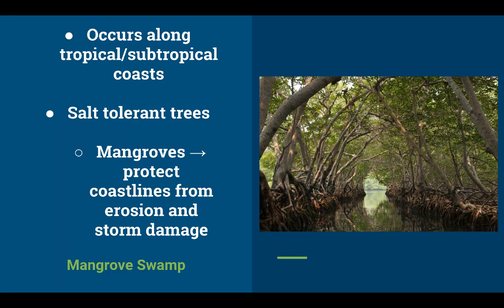Moving on to mangrove swamps — found along tropical and subtropical coasts, these feature salt-tolerant mangrove trees. Mangroves have adapted to extract water from salty environments and release the salt through their leaves via white circles visible on the underside of the leaf. They protect coastlines from erosion and storm damage, and their roots trap organic material like falling leaves, producing a nutrient-rich environment that provides shelter for fish and shellfish.